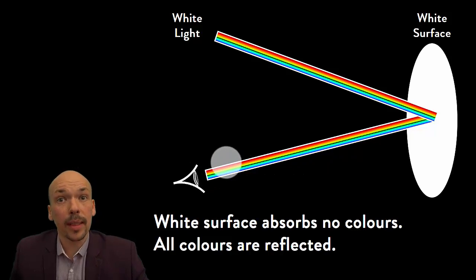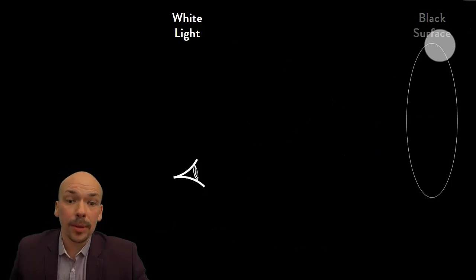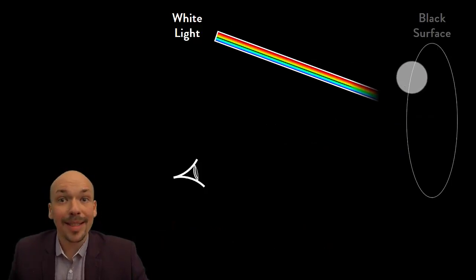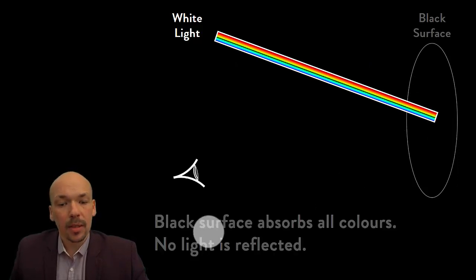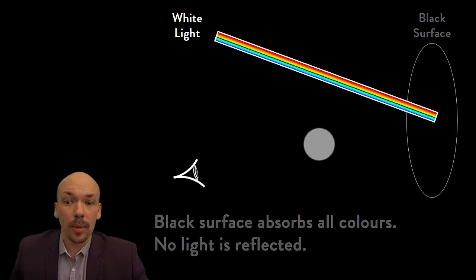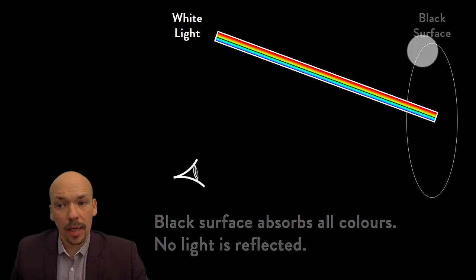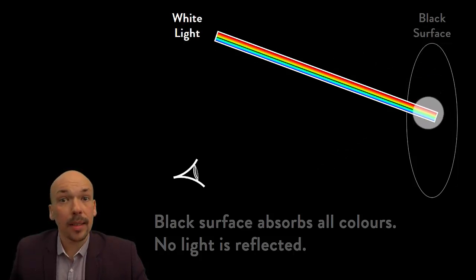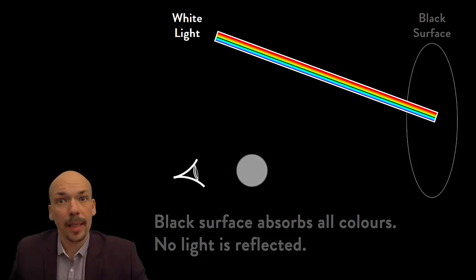And if all colors are reflected together, we will see it as white — that's why a white surface appears to be white. If we have a black surface, black is the opposite of white, so no colors are reflected. A black surface absorbs all colors, no light is reflected, and that's why we see it as black. So black isn't actually a color in physics — it's the absence of light.